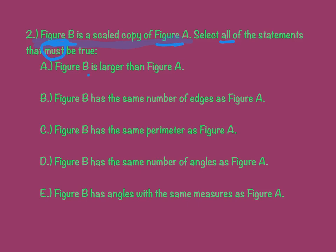So, the first one says figure B is larger than figure A. Well, that doesn't have to be true, right? So, I'm going to say nope to that one. Figure B has the same number of edges. Well, if they're a scaled copy, we know that they're the same shape, and therefore, they would have the same number of edges. So, B is a go.